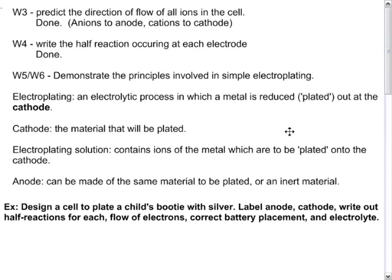For the first example: design an electrolytic cell to plate a child's bootie with silver. Label the anode, the cathode, write out the half reactions for each, show the flow of electrons, the correct battery placement, and the electrolyte. Pause this video, attempt to do that, and then continue on to see if you're right.